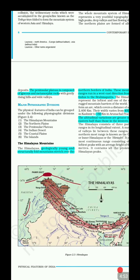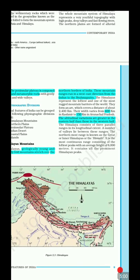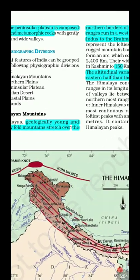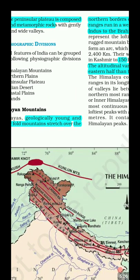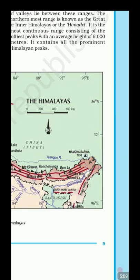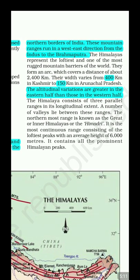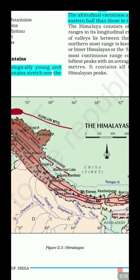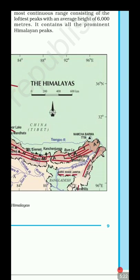You will find lots of thrust faults in the Himalayan mountains. These mountains run in a west-east direction, starting from the Indus River and ending at the Brahmaputra. The Himalayas represent the loftiest and most rugged mountain barriers in the world. The range is very broad — roughly 400 km near the west, but only about 150 km wide towards Arunachal Pradesh.